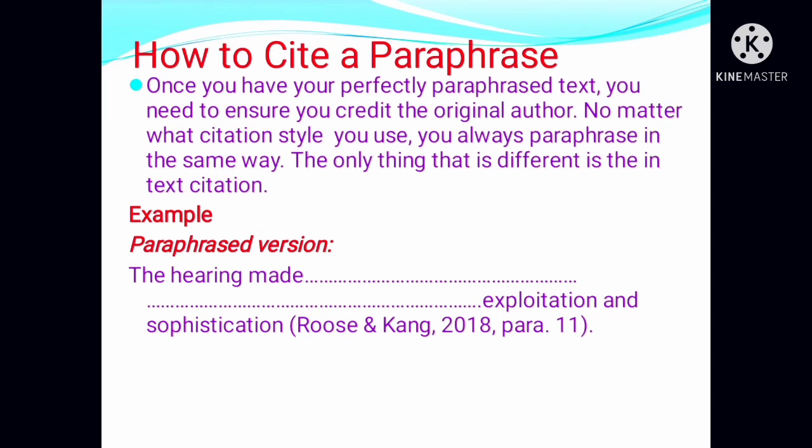In brackets: 'Ruse and Kang, 2018, para 11.' This means the text was written by Ruse and Kang, published in 2018, paragraph number 11. You can give a paragraph number, or if it is a book, you can give a page number. Citation means acknowledging from where you have borrowed the text.